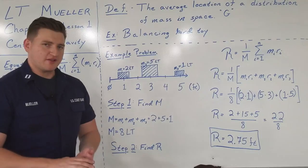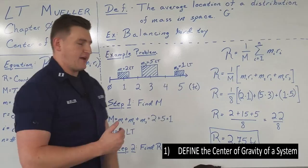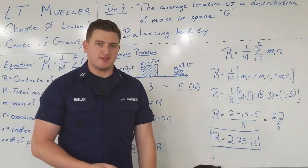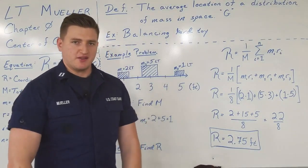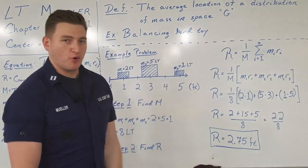To start off the lesson, let's start with the definition of center of gravity. The definition of center of gravity is the average location of a distribution of mass in space. In upcoming lessons and everything that we'll talk about when it comes to ship stability, we're going to refer to this point as point G.